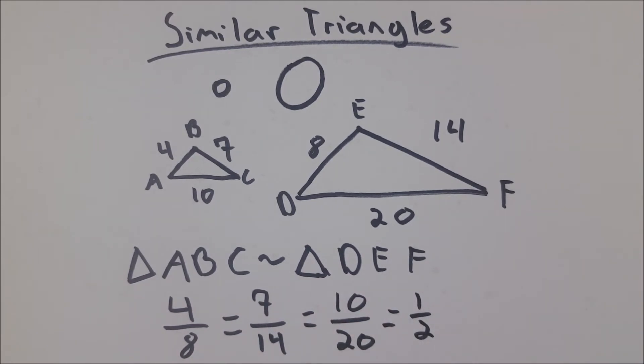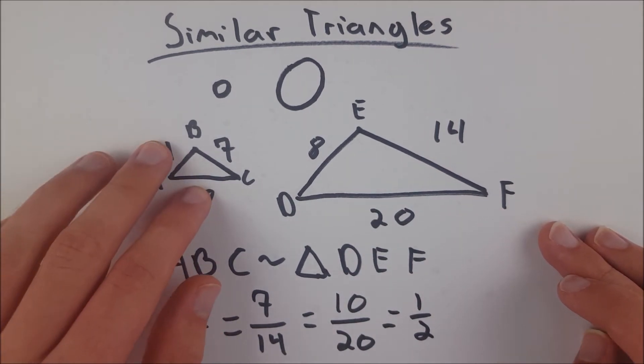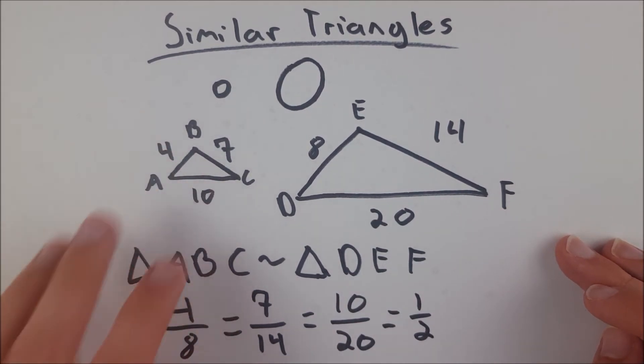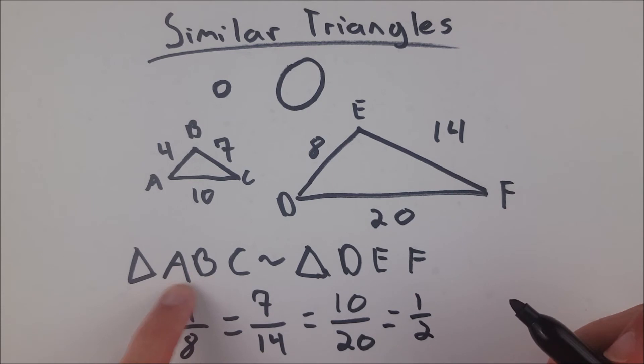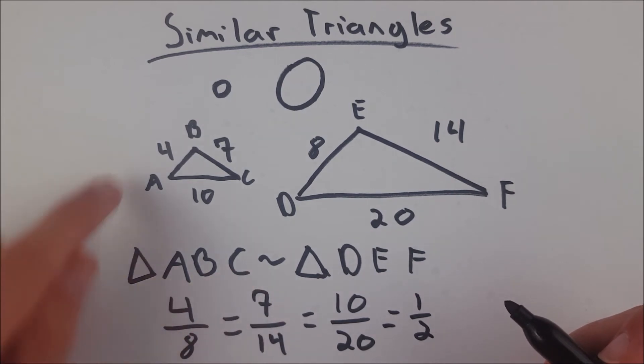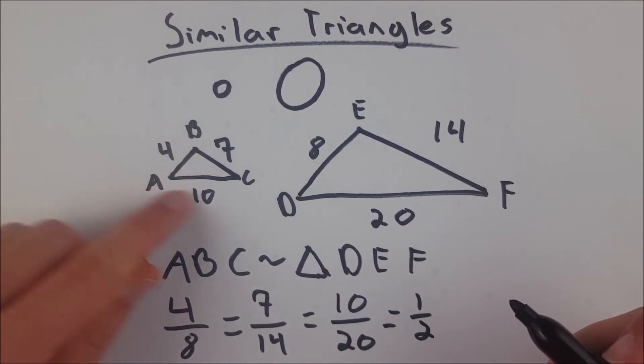Also, with similar triangles, the ratio of any pair of sides of one triangle is equal to the ratio of the corresponding pair of sides. So, let me show you what I mean. Let's say I take side AB over AC. That's a ratio of 4 to 10.